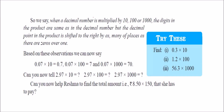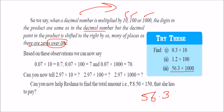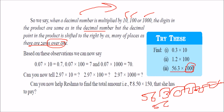When a decimal number is multiplied by 10, 100, or 1000, the digits in the product are the same as in the decimal number, but the decimal point is shifted to the right by as many places as there are zeros after 1. For example, 56.3 into 1000: write 56.3000, shift three places to get 56300.